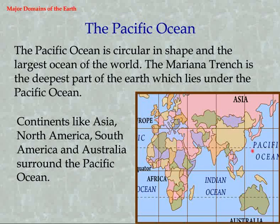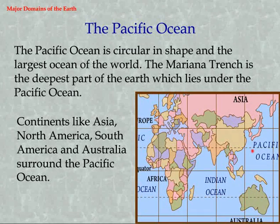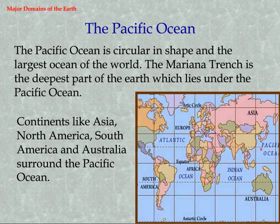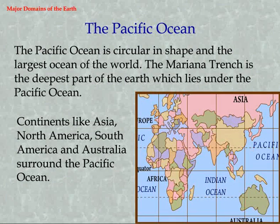The Pacific Ocean is circular in shape and the largest ocean of the world. The Mariana Trench is the deepest part of the Earth, which lies under the Pacific Ocean. Continents like Asia, North America, South America, and Australia surround the Pacific Ocean.